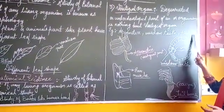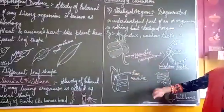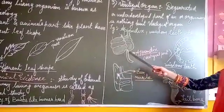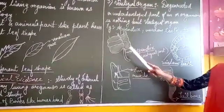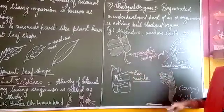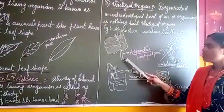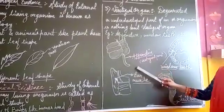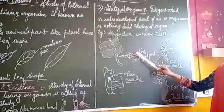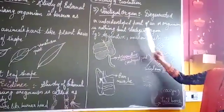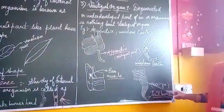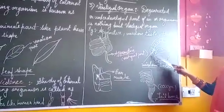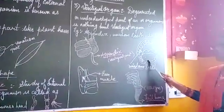Here I give you the examples: appendix, wisdom teeth, and tailbone. Here I have drawn the diagram of exactly appendix. Appendix is the organ which is present in each and every human being. Whenever the size of appendix grows, it creates a problem in our body. That's why the person does the operation of appendix. So it is a vestigial organ because it doesn't have any use in the body. Next, here I have drawn the diagram of wisdom teeth. Wisdom teeth is growing as an extra teeth in any part of the mouth. It doesn't have any use, so it is also a vestigial organ.